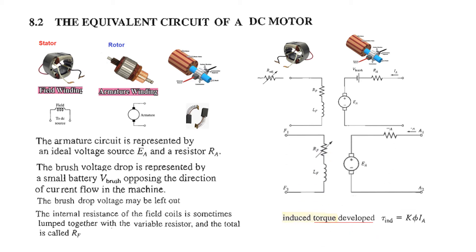The brush drop may be left out because it is very small. The internal resistance of the field is sometimes lumped together with the variable resistor and the total is called RF. Similarly, we may neglect the brush battery and keep only the resistance RA. The internal voltage EA is generated due to generator action or back EMF of the motor.